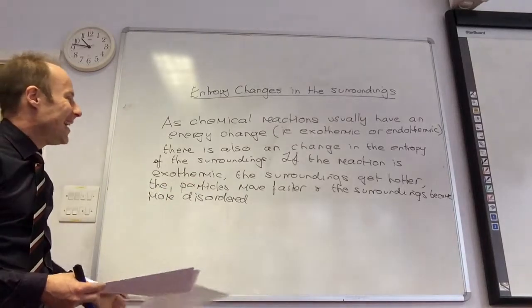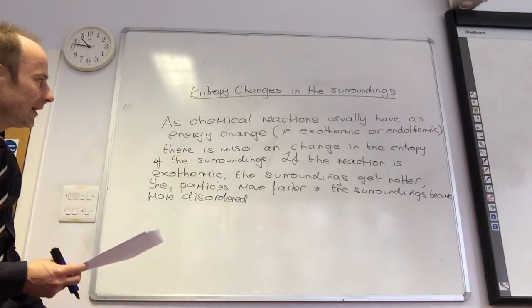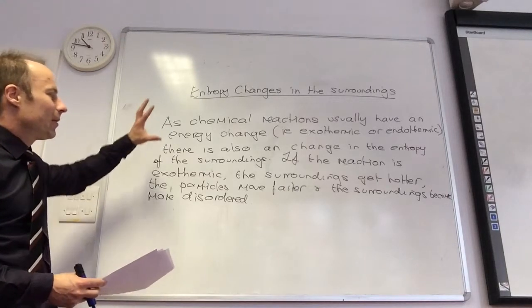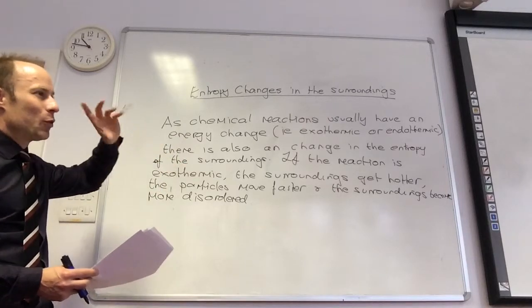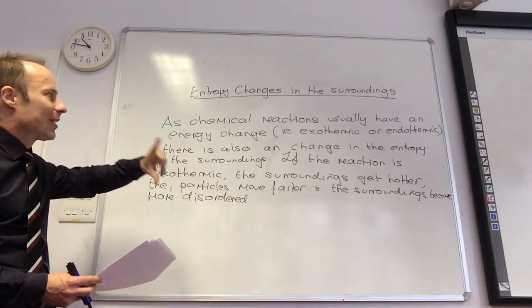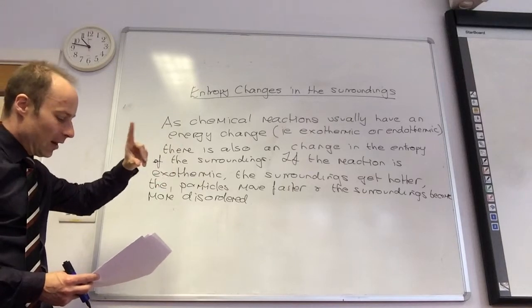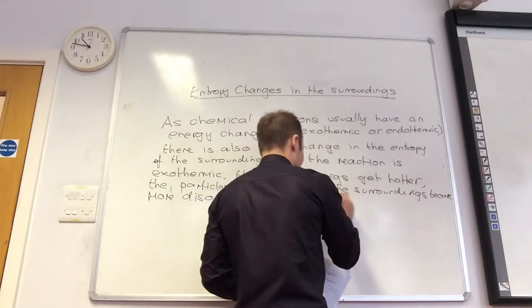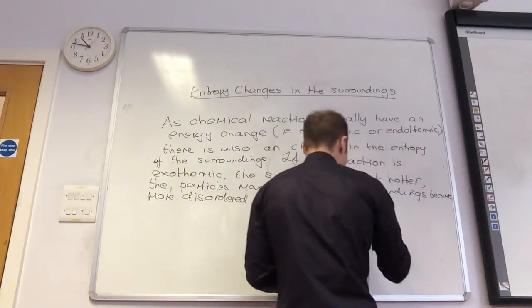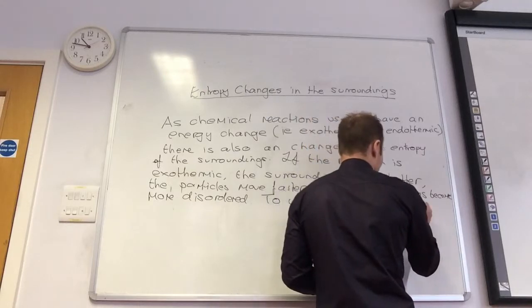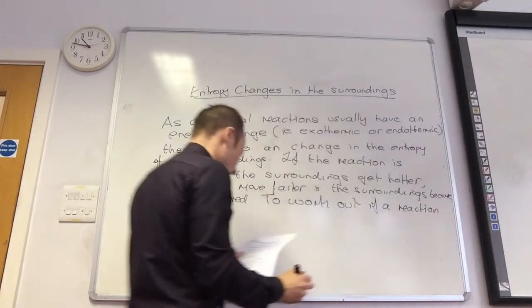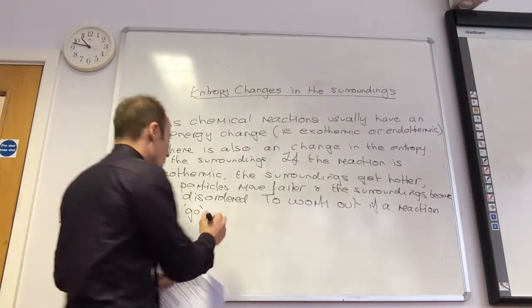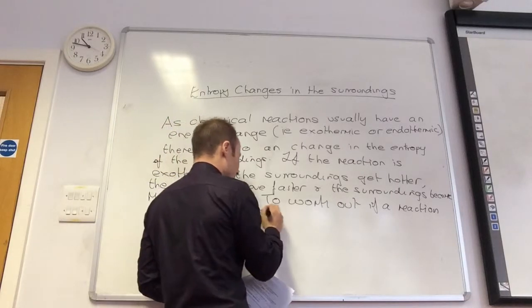The reverse is true for an endothermic reaction. So we combine these in something called Gibbs free energy. We have to combine surroundings and system to give us one value which will allow us to predict whether a reaction will spontaneously occur — to work out if a reaction will be spontaneous. We use Gibbs free energy.